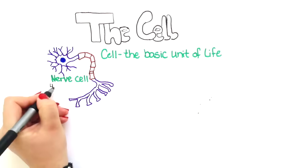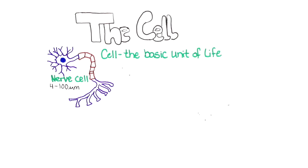Most cells cannot be seen with the naked eye. Nerve cells range from 4 micrometers to 100 micrometers. A micron or micrometer is one millionth of a meter, so a cell that's 100 microns would be the size of a period at the end of a sentence.